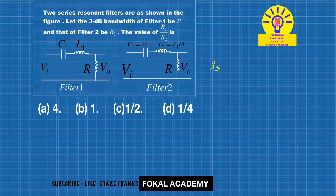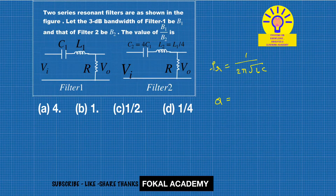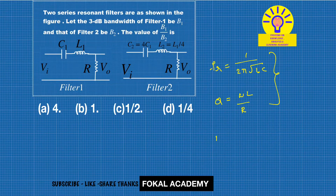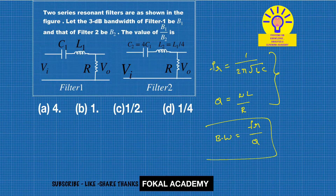The resonant frequency FR is given by the general formula: FR = 1 / (2π√(LC)). The quality factor Q = ωL / R. These two parameters are very important for finding the bandwidth. Bandwidth is the ratio of resonant frequency to quality factor: B = FR / Q.